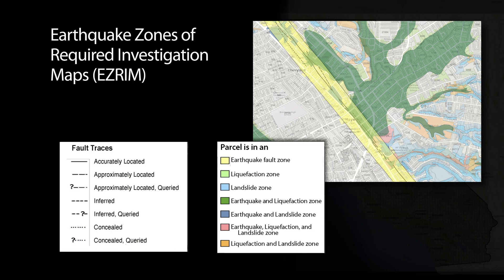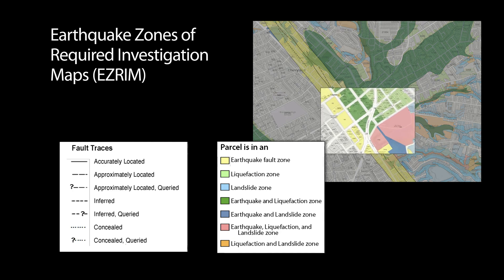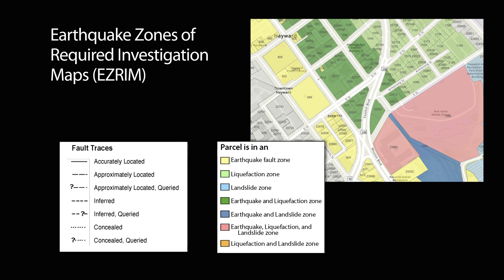They're called Earthquake Zones of Required Investigation maps, or ESRAMs for short. They show areas where geologic data, like rock type and proximity to earthquake sources and faults, indicate a potential for earthquake-triggered hazards. These zones are areas where site-specific investigations are required for certain types of new and existing developments.